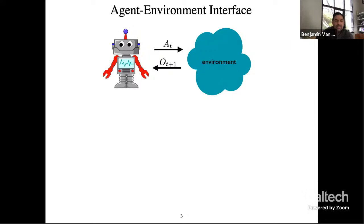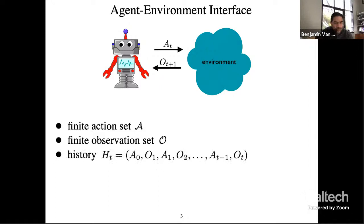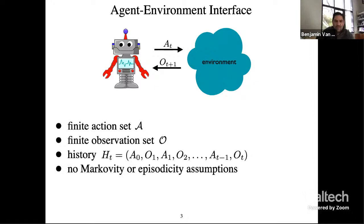This is how I think about reinforcement learning these days. You have an agent and you have an environment, and this is the interface between them. The agent executes an action at each time and registers an observation that the environment spits back. This is the only interaction between the agent and the environment. For this talk, let's assume that the action set and observation sets are finite.